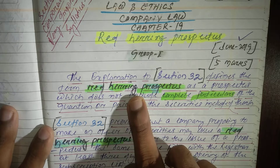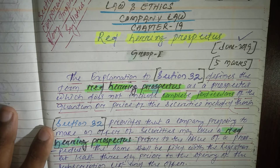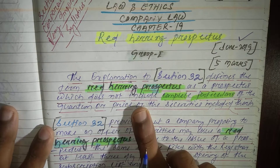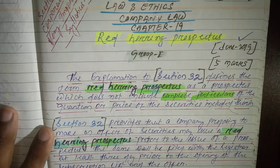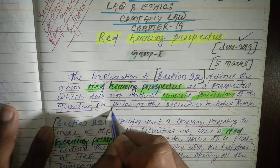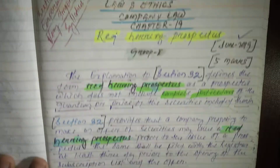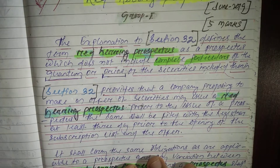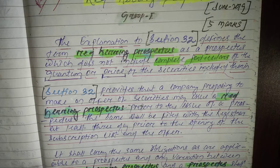Section 32 defines the term Red Herring Prospectus as a prospectus which does not include complete particulars of the quantum or price. So both the quantum and price are not included under the Red Herring Prospectus.